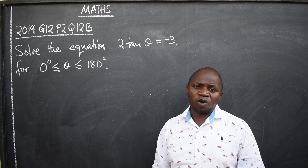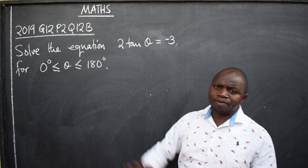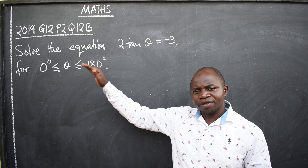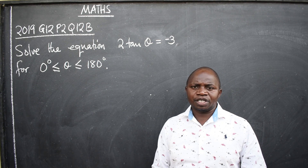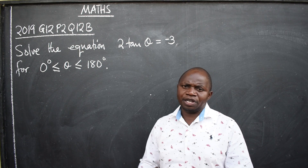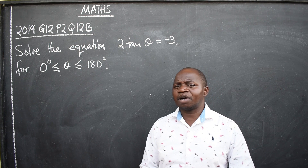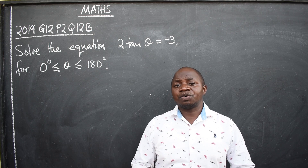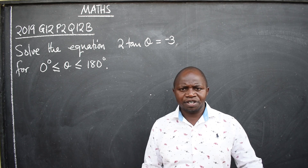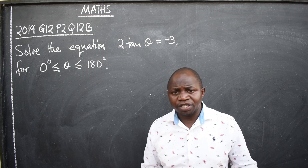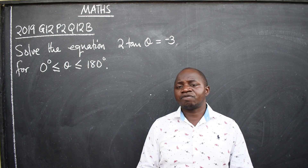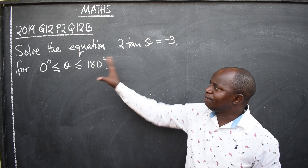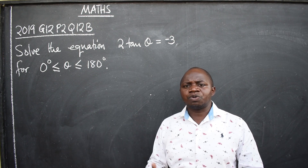First thing, identify the topic. This is trigonometry. What type of equation is this? It is coming from trigonometry, therefore the type of equation is what is called a trigonometric equation. Please don't forget, whenever you are in your exams, identify the topic and also the type of equation you are dealing with. We have different types: linear equations, trigonometric equations, quadratic equations, cubic equations. The moment you identify the type of equation, you will understand how to go about it.